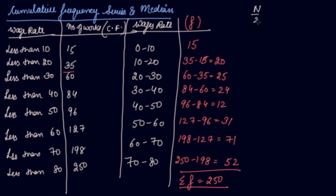Now, N by 2th item, which is equal to 250 divided by 2, which is equal to 125th item. So 125th, in which series we have to see, in which frequency we have to see, we have to see cumulative frequency. So it comes in the 127th, so your median class becomes 50 to 60.